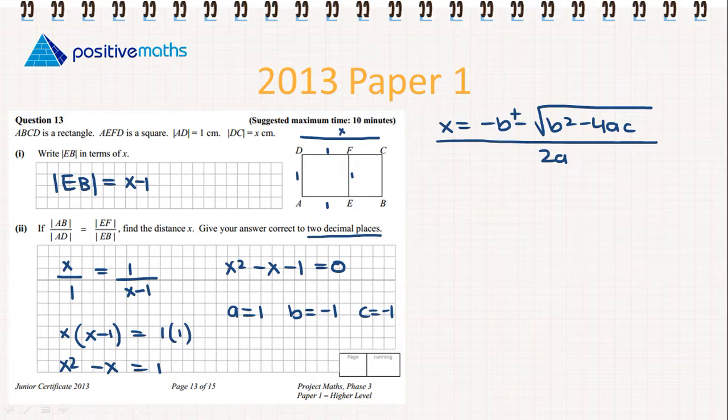So we're going to fill in our values. x equals minus minus 1 plus or minus the square root of minus 1 squared minus 4 by 1 by minus 1.